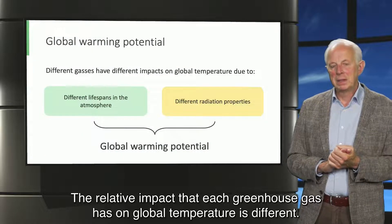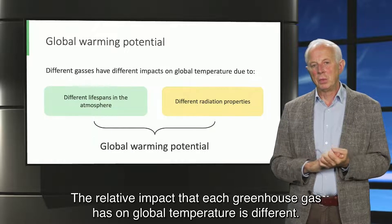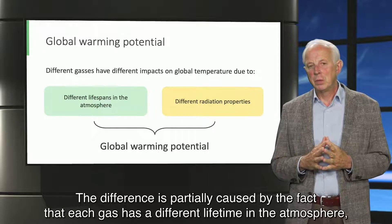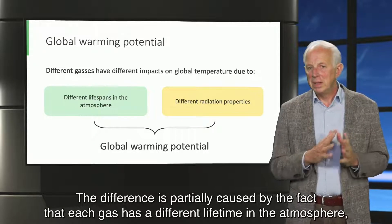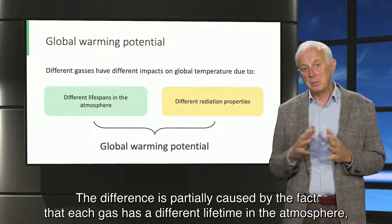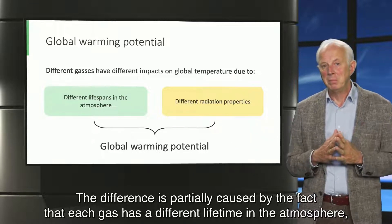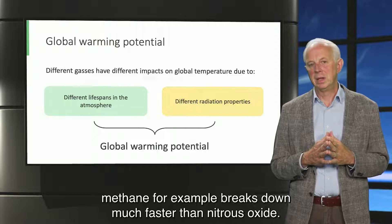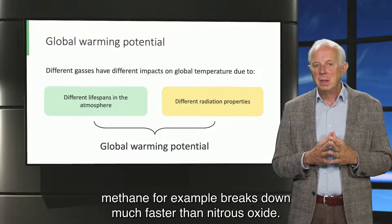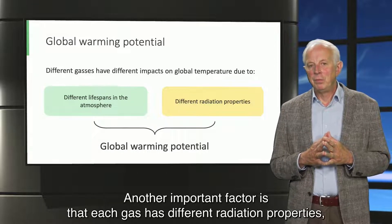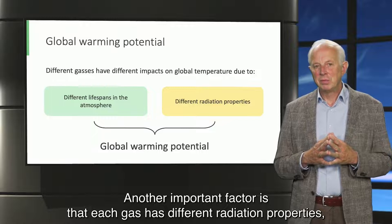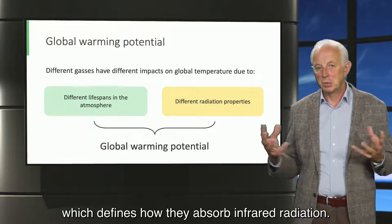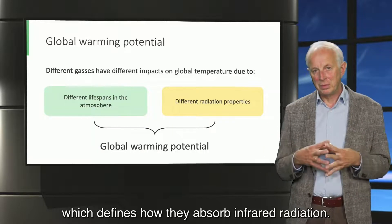The relative impact that each greenhouse gas has on global temperature is different. The difference is partly caused by the fact that each gas has a different lifetime in the atmosphere. Methane, for example, breaks down much faster than nitrous oxide. Another important factor is that each gas has different radiation properties, which defines how they absorb infrared radiation.